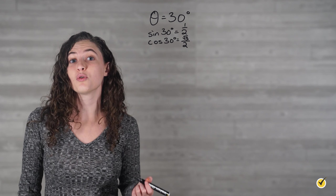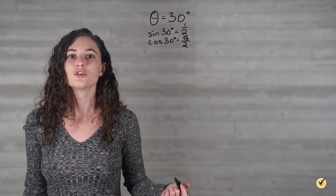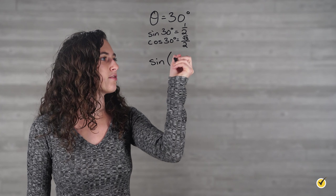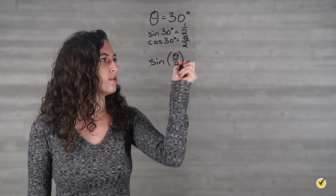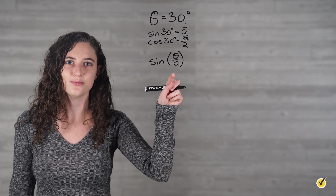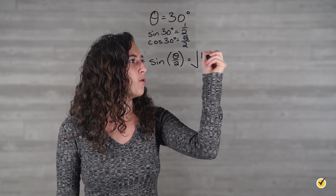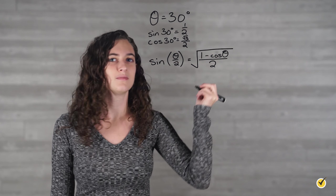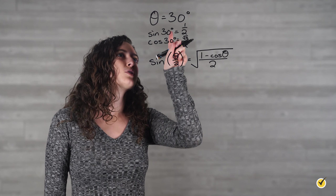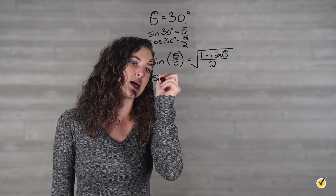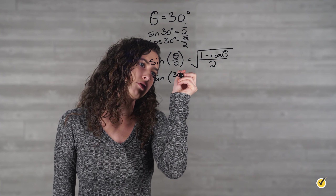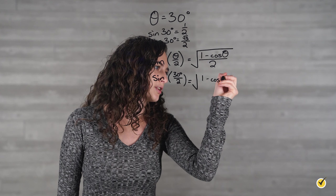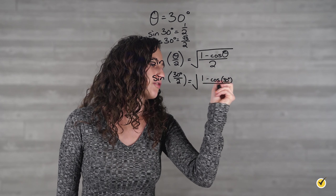Then we simply substitute all of the appropriate values into the formula. We're going to write out our formula. So we have the sine of theta over 2 — remember this is our half angle identity, which is why we're dividing by 2 — is equal to the square root of 1 minus cosine of theta over 2. Now we'll plug in all the values that we know. So we have sine of 30 degrees over 2 is equal to the square root of 1 minus cosine of 30 degrees over 2.